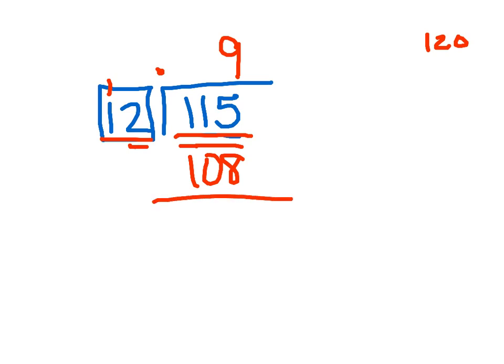So I have 108. So I'm going to have 115 minus 108, and that gets me 7 left over. Nothing left to bring down, and 7 is less than 12, so I'm good to go on that.